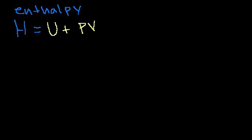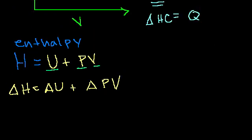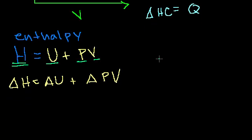Let's define H as the internal energy plus pressure times volume. So then what would my change in enthalpy be? The change in enthalpy equals the change in internal energy plus the change in pressure times volume. Now this is interesting — by definition, this is a valid state variable. Why? Because it's the addition of other state variables. At any point on my PV diagram, U is the same no matter how I got there, P is the same by definition, V is definitely the same. So if I just add them up, this is a valid state variable.